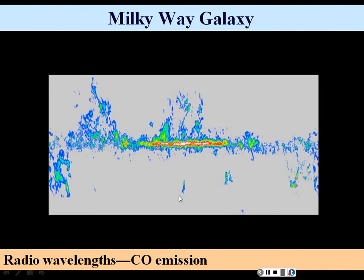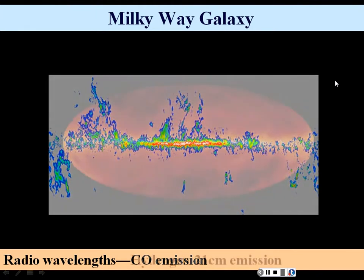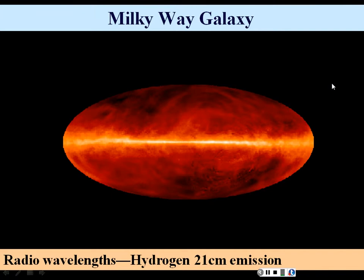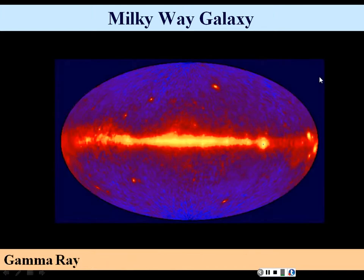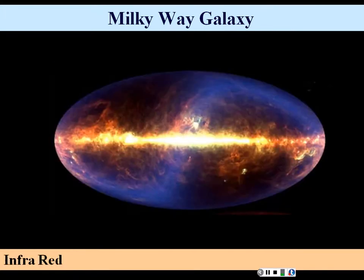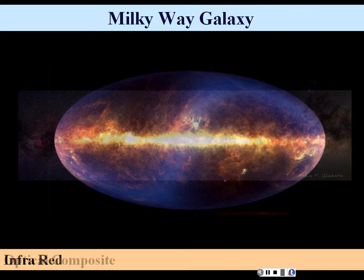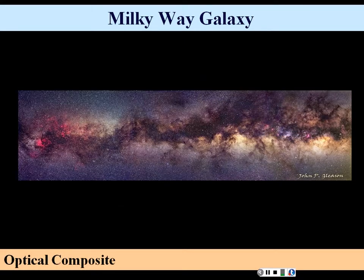Here's a look at the Milky Way galaxy using different parts of the spectrum. This one is in the radio wavelength — carbon monoxide emission. Here's the Milky Way using hydrogen 21-centimeter emission, also in radio but a different frequency. Here's what the Milky Way looks like in gamma rays, identifying the true hotspots. Here it is in infrared. And finally, an optical composite of all these together, making a nice image of our galaxy.